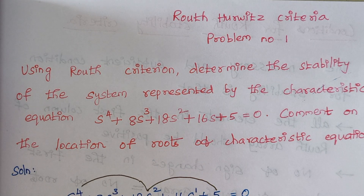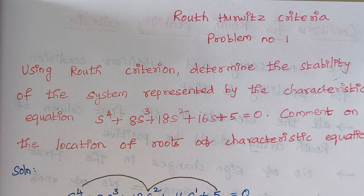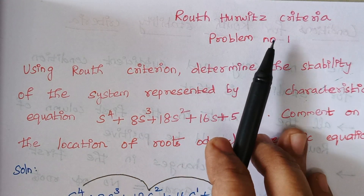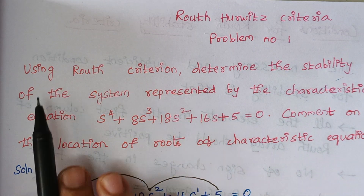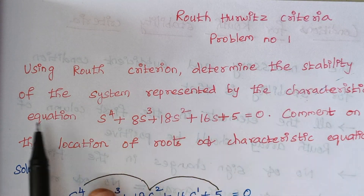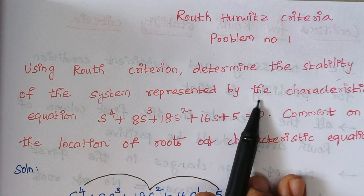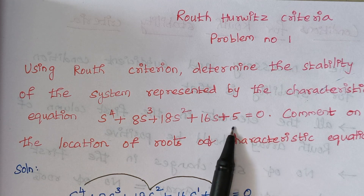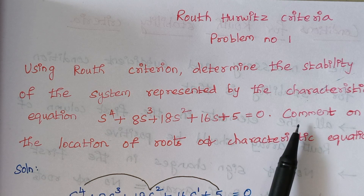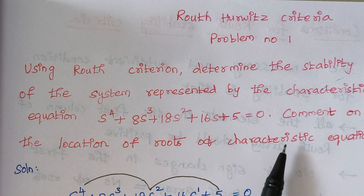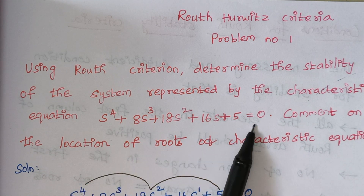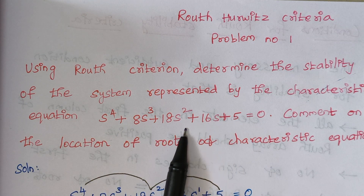Hello viewers, I am Kausalya. Today we are going to solve problem number 1 under the category Routh-Hurwitz criteria. The problem is: using Routh criterion, determine the stability of the system represented by the characteristic equation. This is the given characteristic equation, and from this equation we have to check the stability.